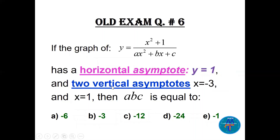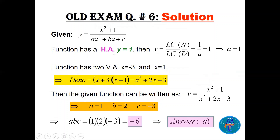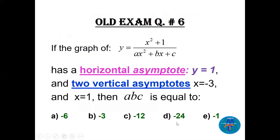Question 6 (multiple choice): the graph of a rational function has horizontal asymptote y = 1 and two vertical asymptotes at x = -3 and x = 1. Find a × b × c. Since there is a horizontal asymptote with equal degrees, the leading coefficient a = 1. The denominator factors give (x + 3)(x - 1) = x² + 2x - 3, so b = 2 and c = -3. Therefore a × b × c = 1 × 2 × (-3) = -6. The answer is A.